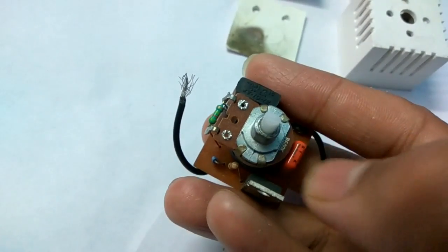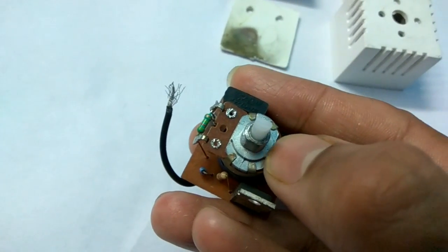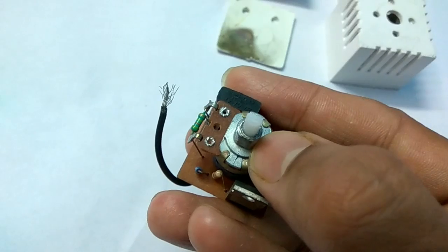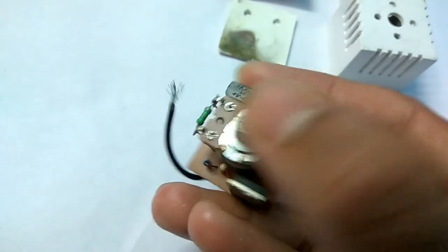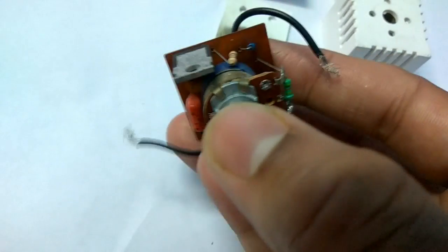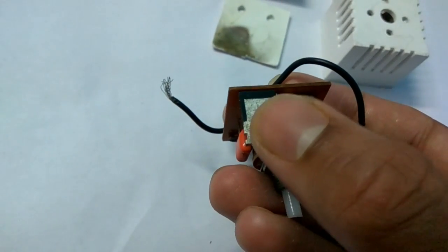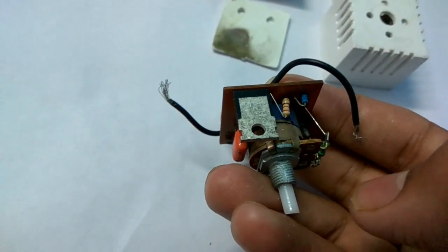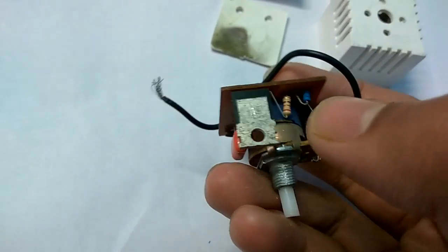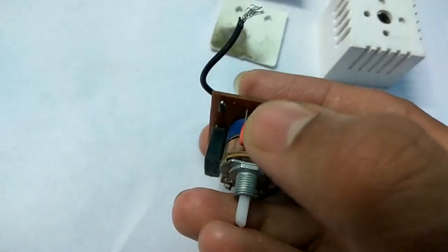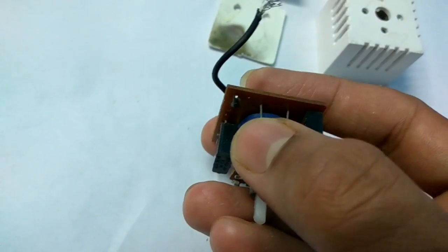This thing I'm pointing out here is the potentiometer or the variable resistance. This IC you can see, this is a BT 136, this is a TRIAC. This orange thing is the capacitor.